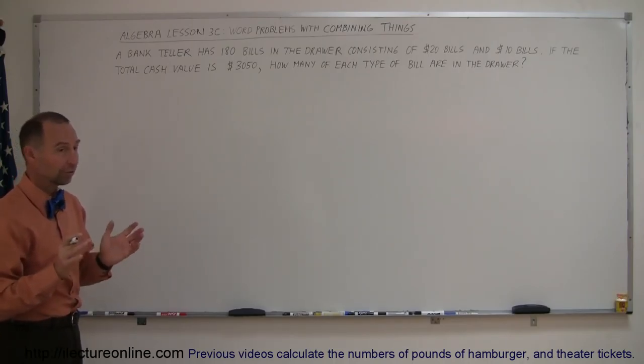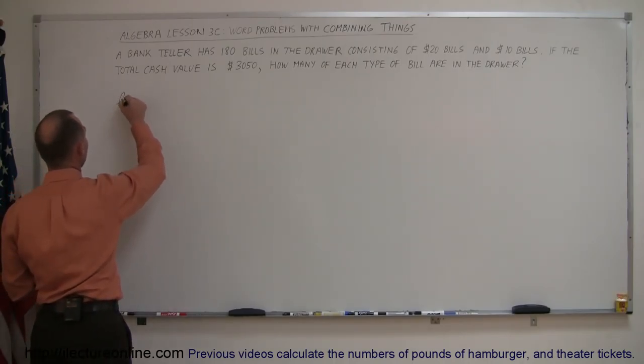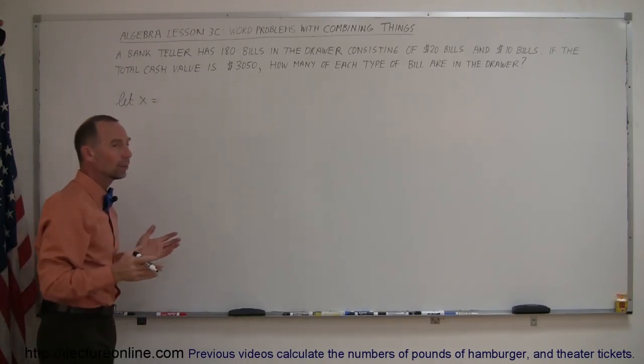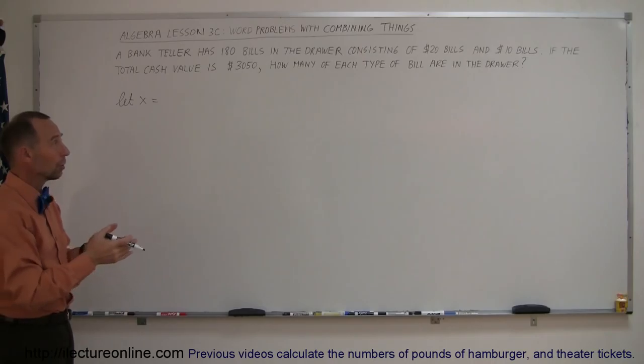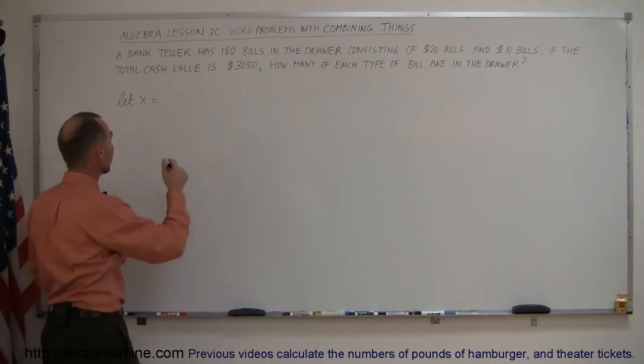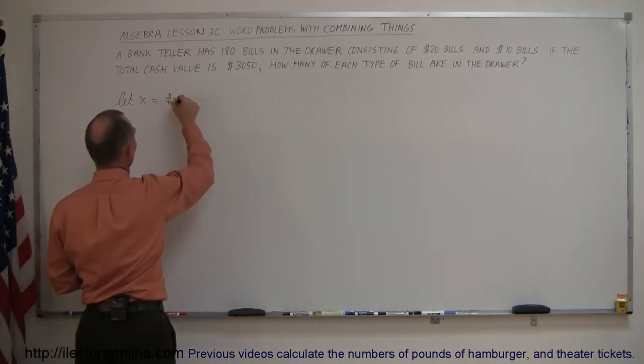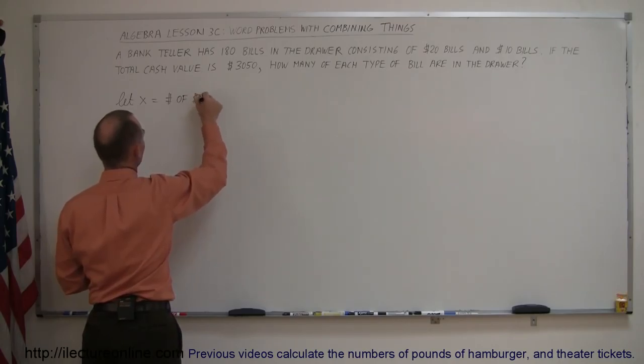All right, so let's start defining. Let's say let x equal, now what should we let it equal to? Well, we have two different kinds of bills, and so we can let x equal the number of, let's say $20 bills. So let x equal the number of $20 bills.